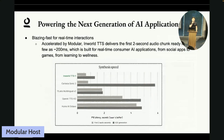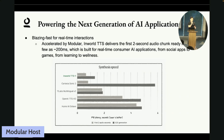We are also blazing fast for real-time interaction, thanks to optimization by the Modular framework. InWorld TTS can deliver the first two-second audio chunk in as low as 200 milliseconds, which is essential for real-time consumer AI applications — from social apps to games, from learning to wellness. Comparing with other TTS models on two metrics — first two-second audio chunk and end-to-end generation latency — InWorld is significantly faster than other providers in the market after Modular optimization.